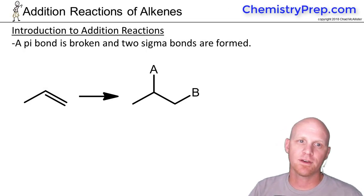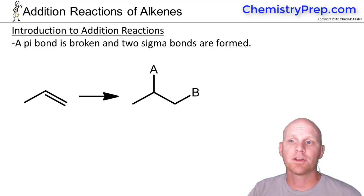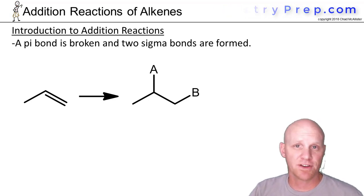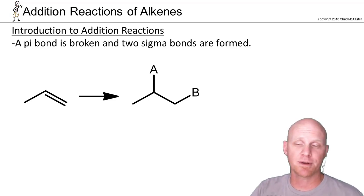In the last chapter we learned how to make alkenes with elimination reactions and now we're going to do exactly the opposite and talk about the reactions of alkenes, specifically the addition reactions of alkenes, which in many respects are completely the exact opposite of elimination reactions.